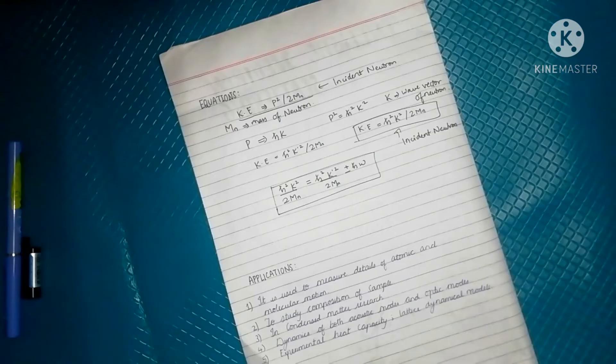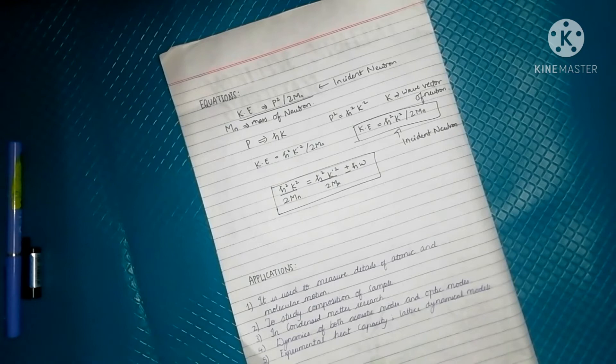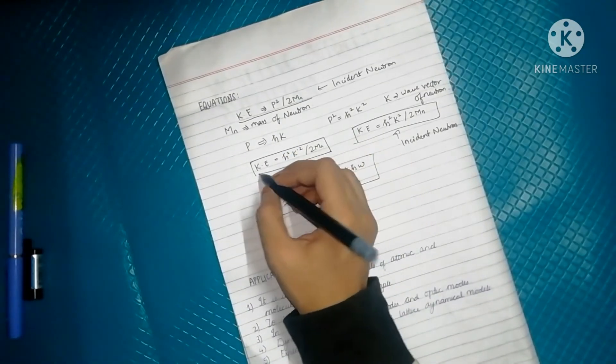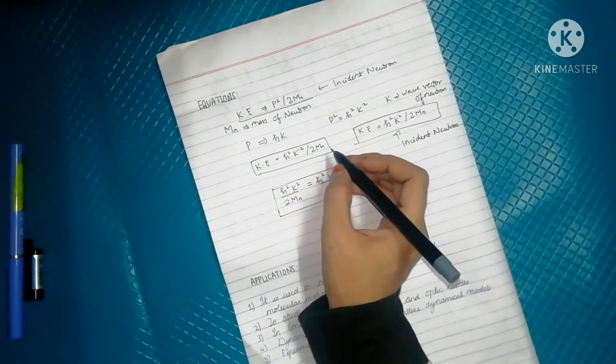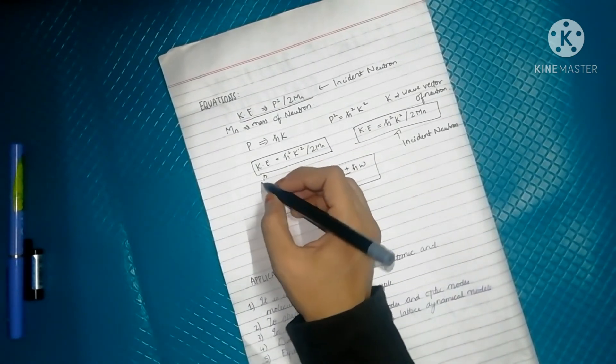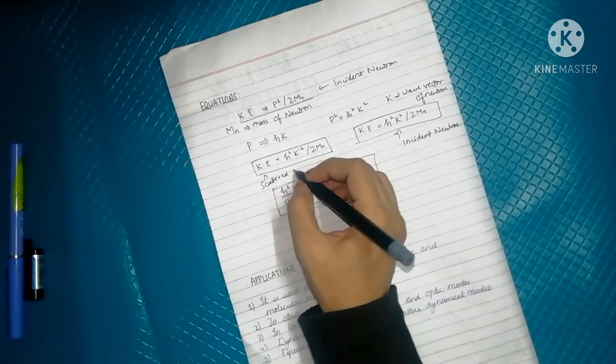In case of scattered neutron, the kinetic energy will be given by this equation: ℏ²K'² / 2M_n. This equation is for the scattered neutron.